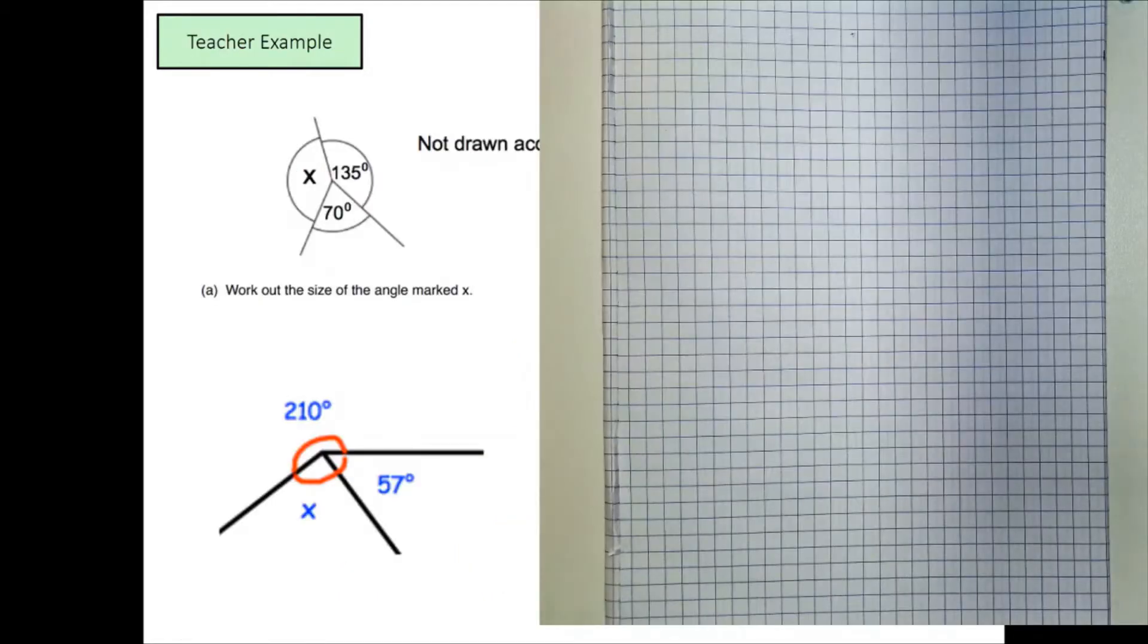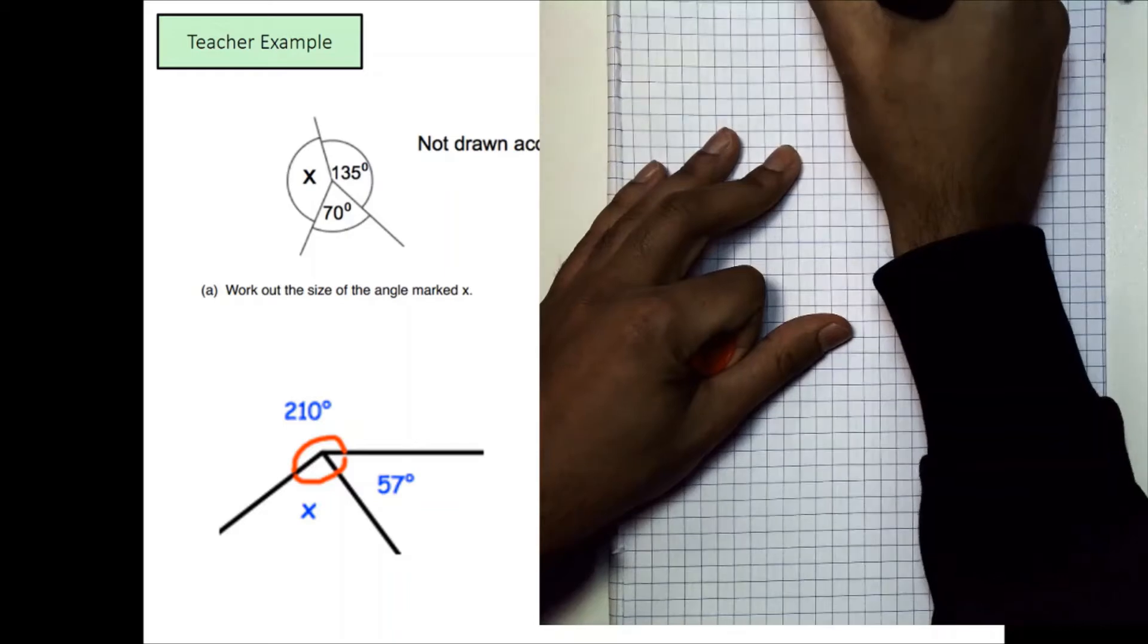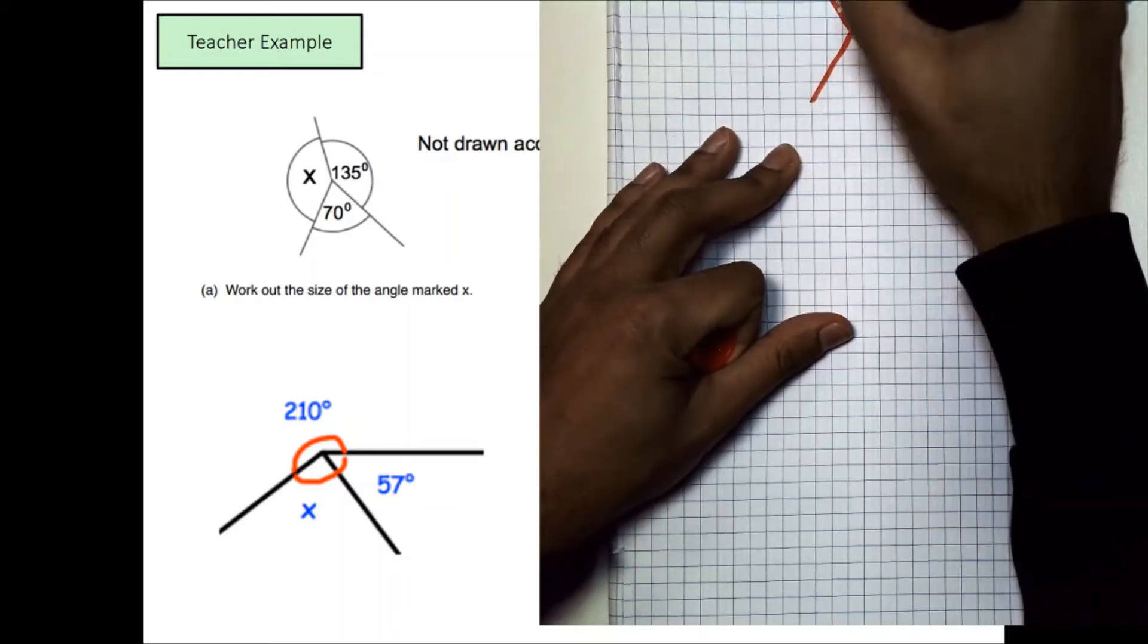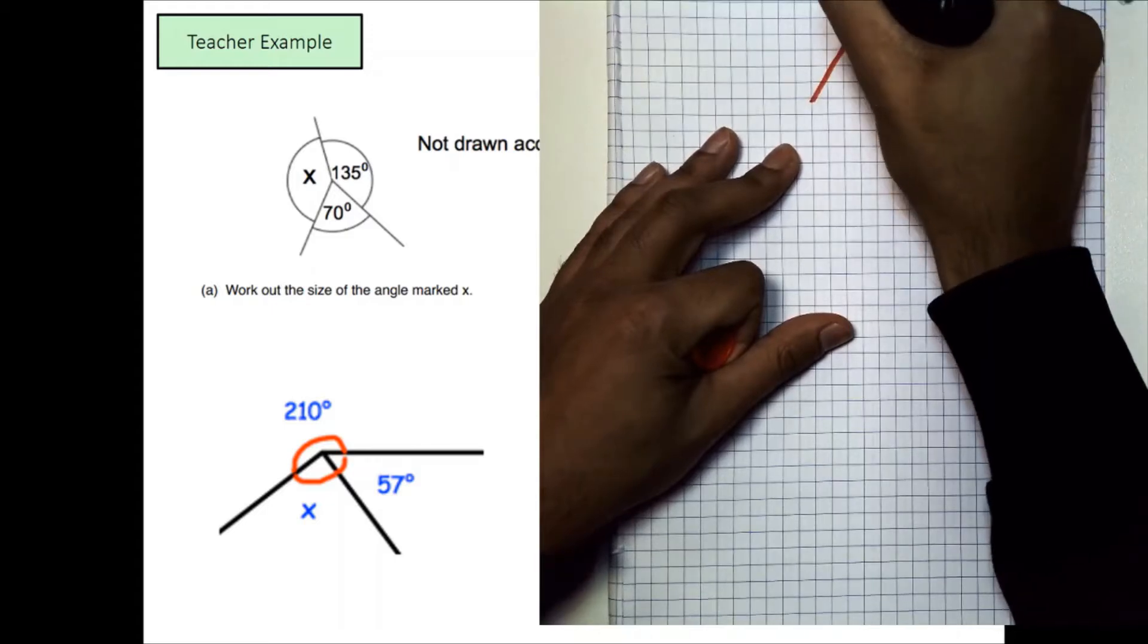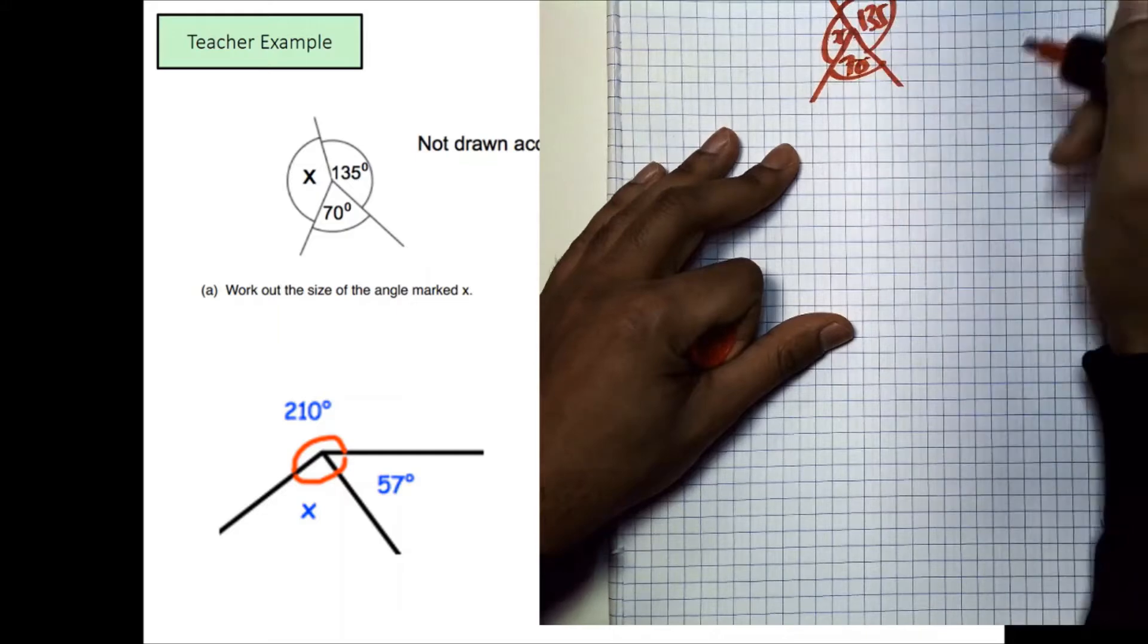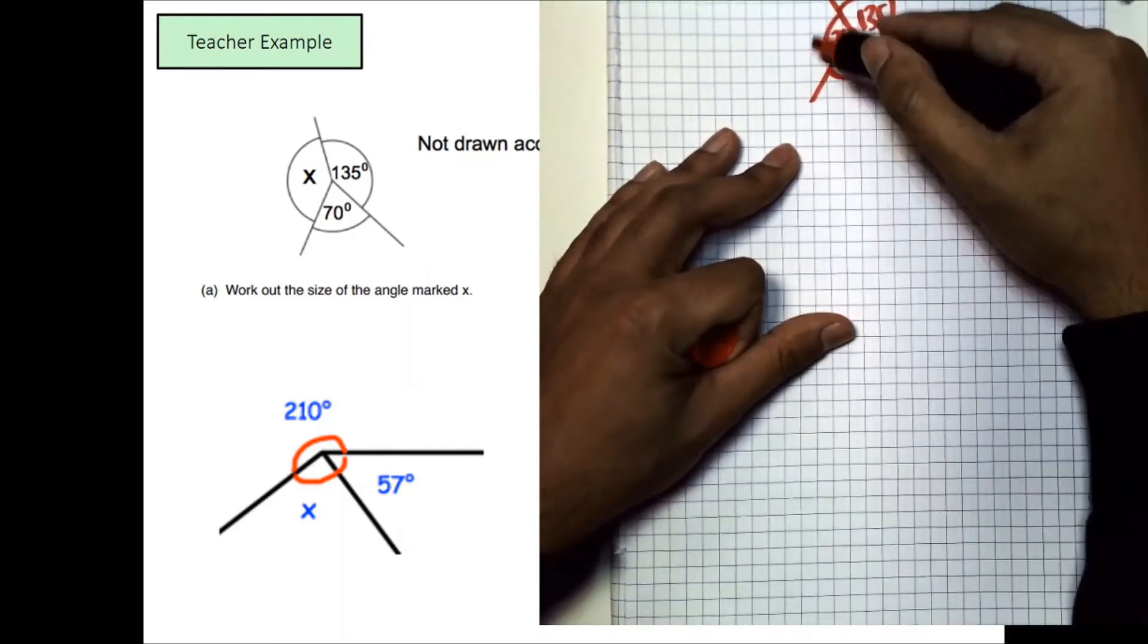So let's look at some examples now. Firstly, we're given an angle that looks something like this. If I were to draw it, it would be something like this. This is 135 degrees. This is x and that would be 70 degrees.